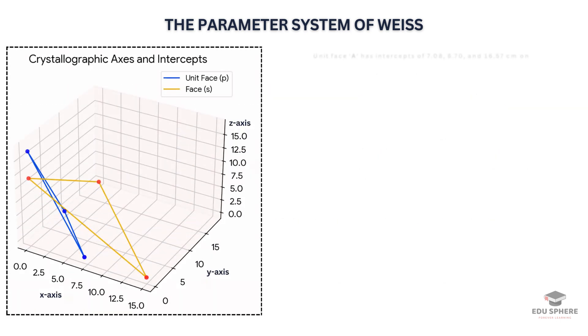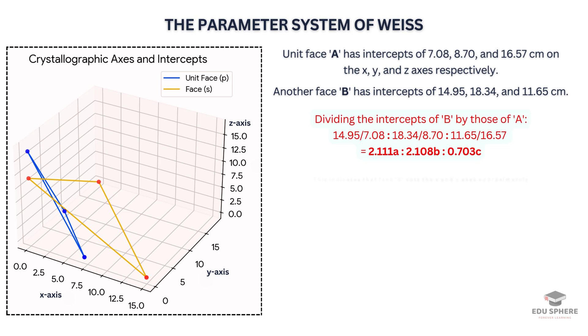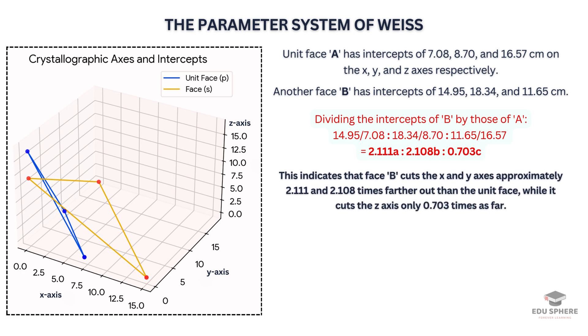Let's say the unit face A has intercepts of 7.08, 8.70, and 16.57 centimeters on the x, y, and z axes respectively. Another face B has intercepts of 14.95, 18.34, and 11.65 centimeters. Now dividing the intercepts of B by those of A yields this result. This indicates that face B cuts the x and y axes 2.111 and 2.108 times farther out than the unit face, while it cuts the z-axis only 0.703 times as far.